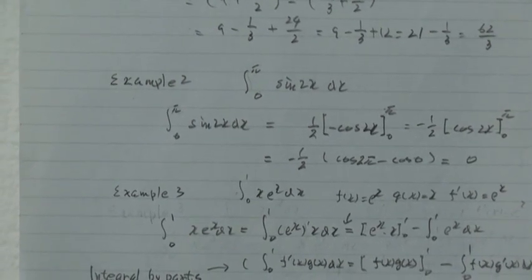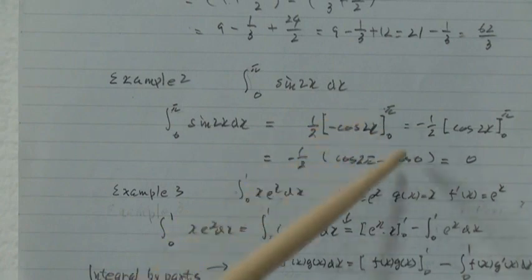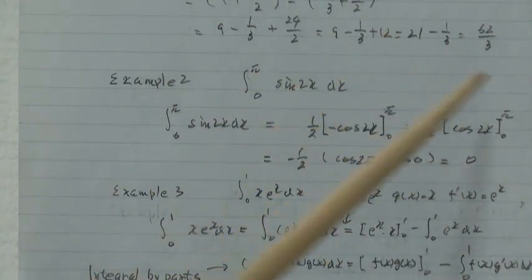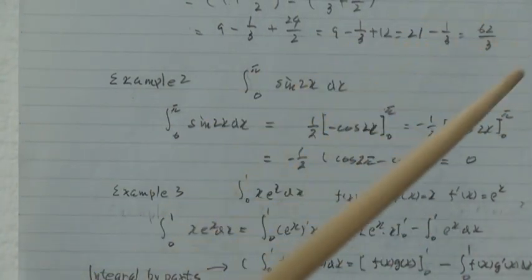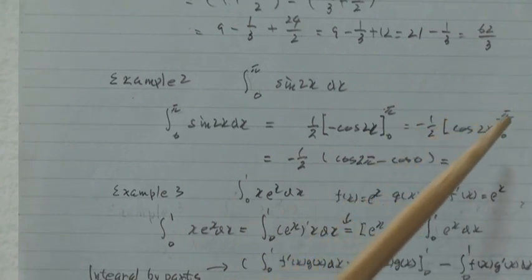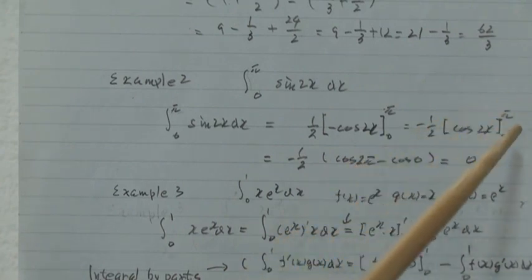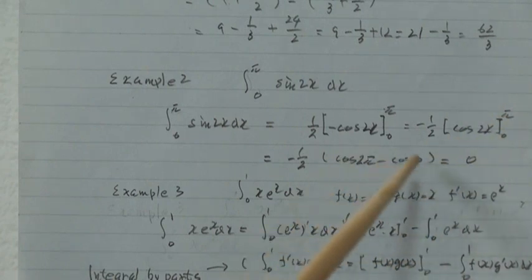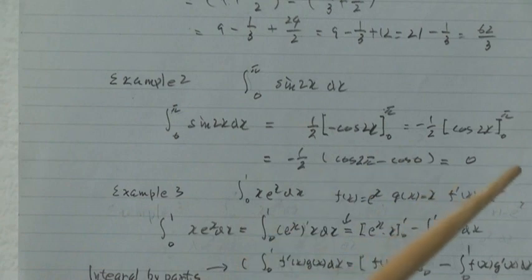Example 2: Integral from 0 to π of sin(2x)dx. This integral from 0 to π equals, by definition... Substituting π and substituting 0, the result equals 0.